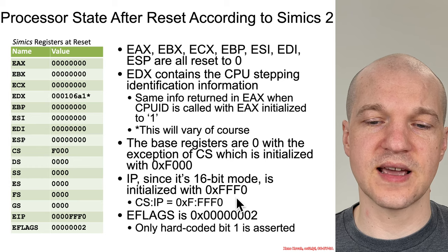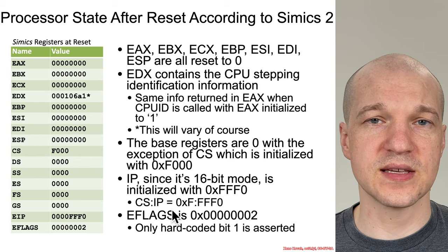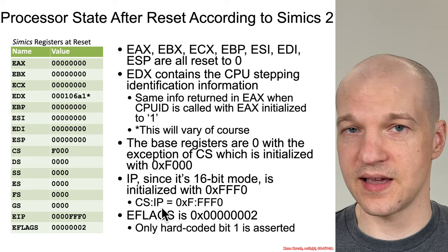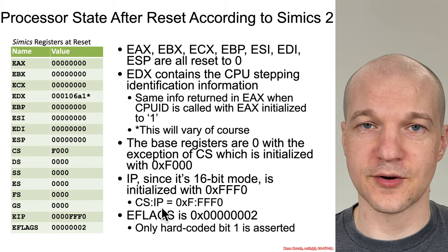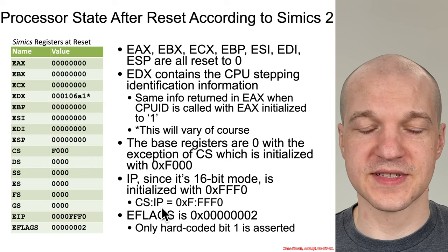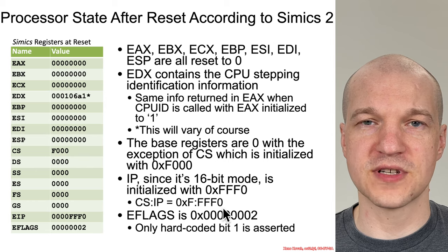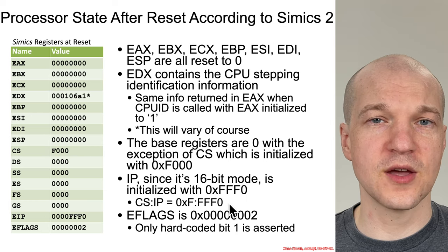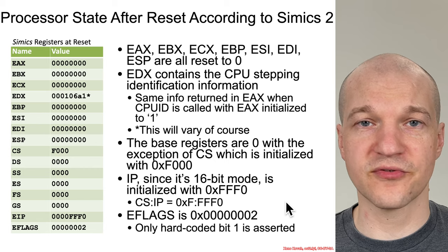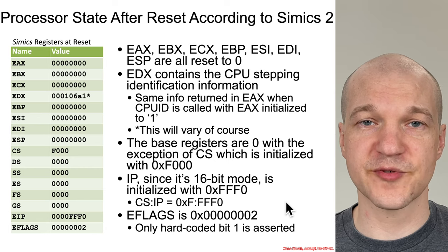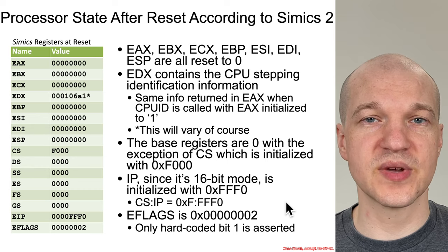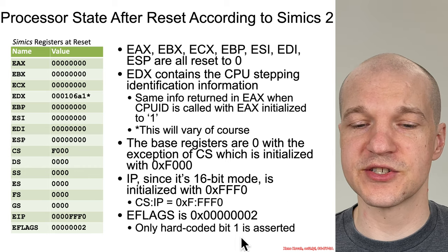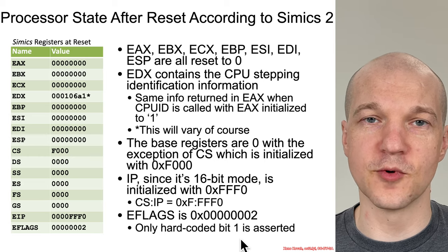IP is 16-bits and it's set to FFFF0. And CS and IP — the full logical address — remember from Architecture 2001, logical addresses are a segment selector and a register or hard-coded value, in this case a 16-bit value. So that is FFFF0. We'll talk about that in a bit when we discuss segmentation, which actually works differently in the original 16-bit execution mode. EFLAGS is set to 2 because bit 1 is always hard-coded to 1 in modern systems.